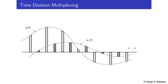This time we will talk about Time Division Multiplexing. TDM is suitable for types of modulation that involve discretization, such as instantaneous sampling and pulse modulation in its various forms: Pulse Amplitude Modulation, Pulse Width Modulation, and Pulse Position Modulation.